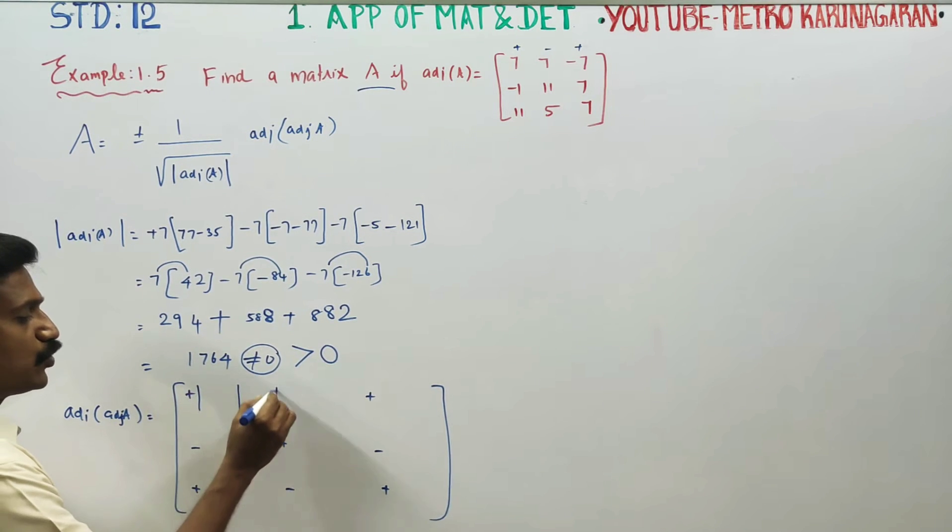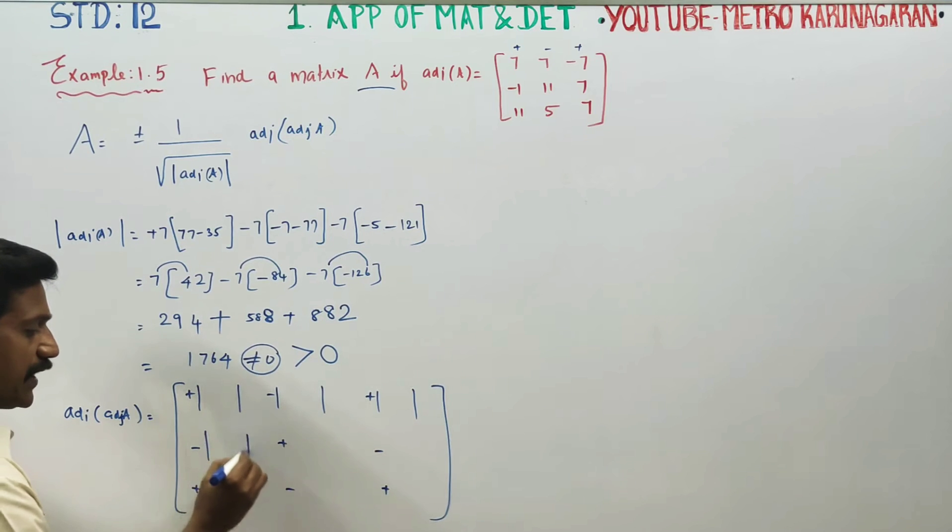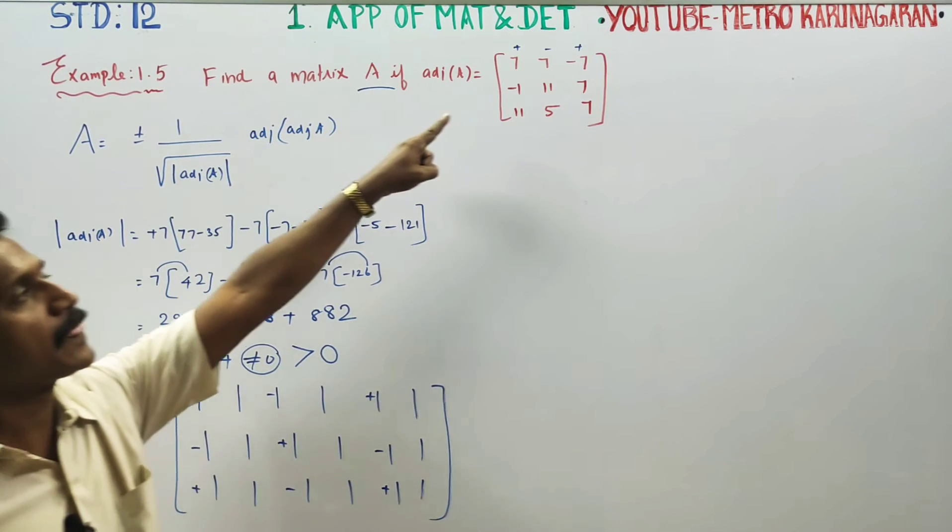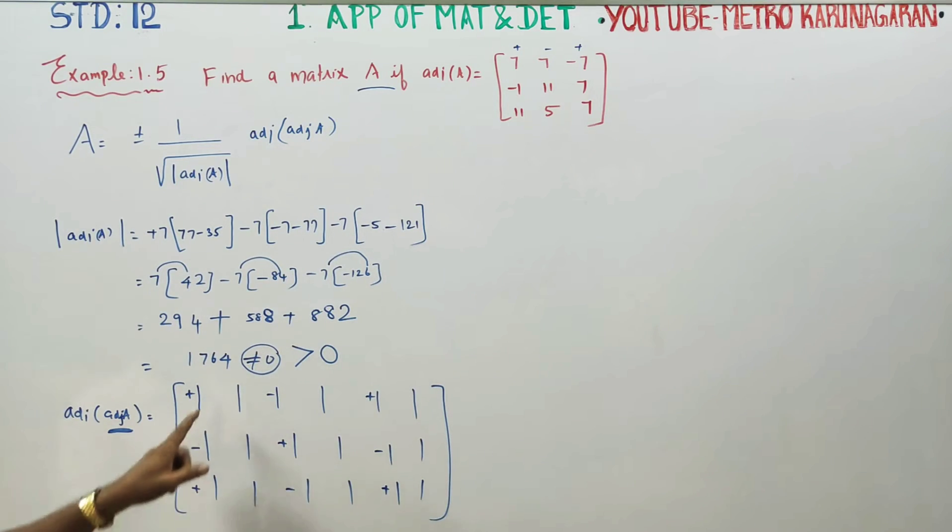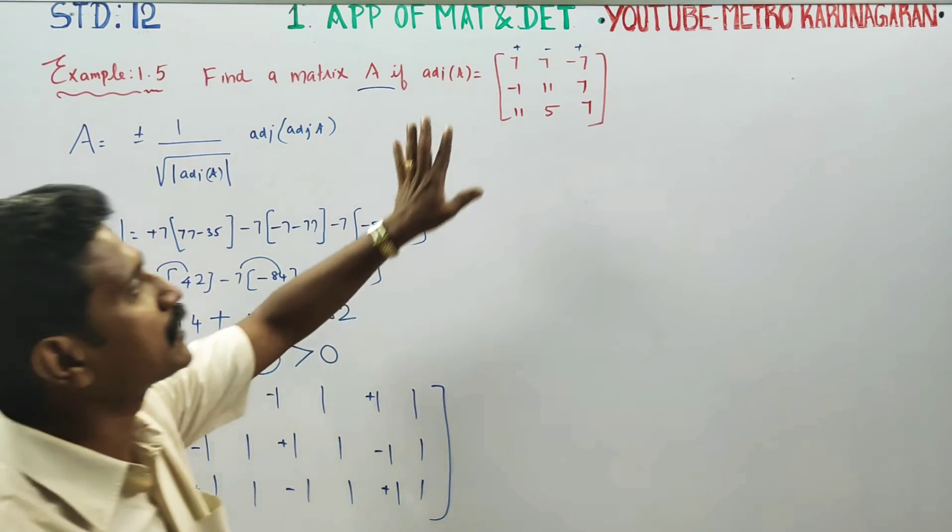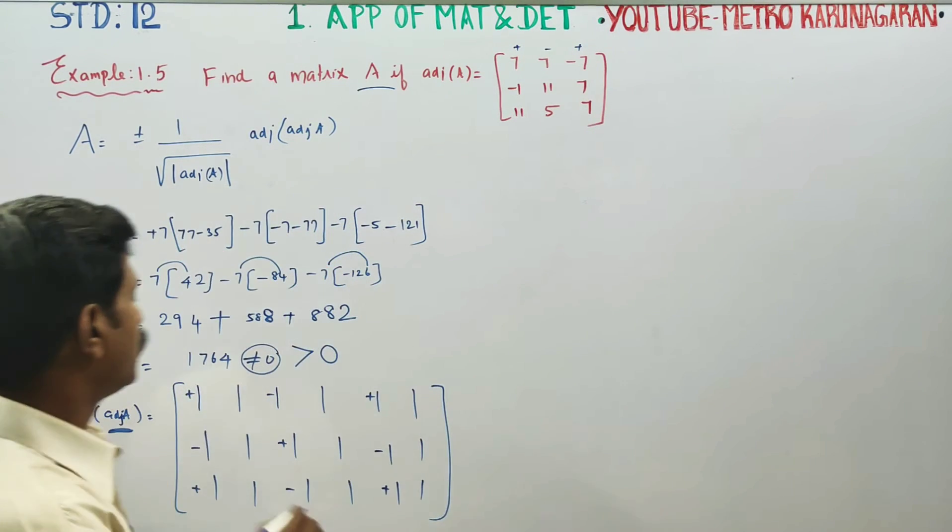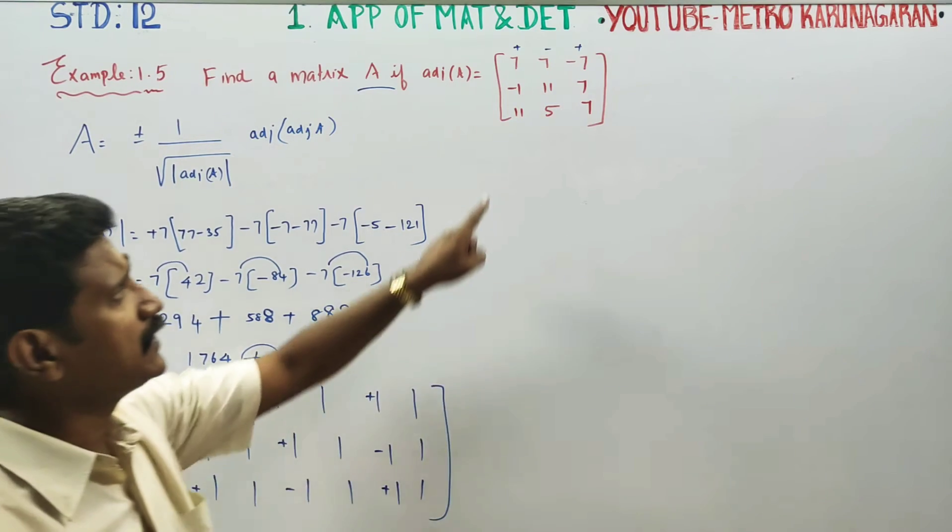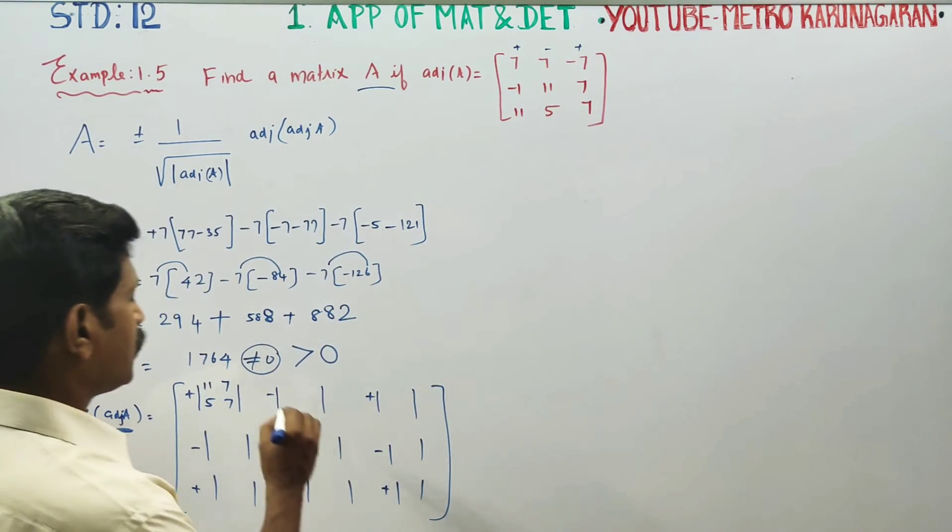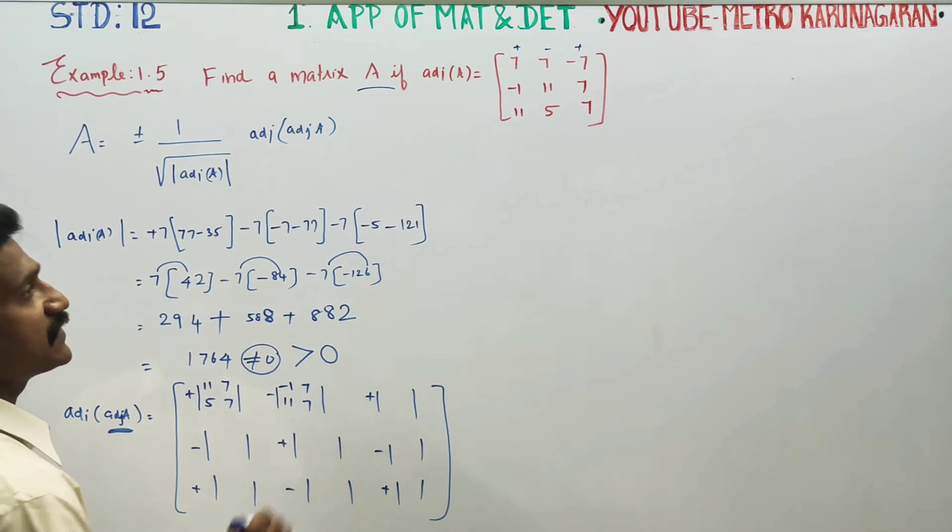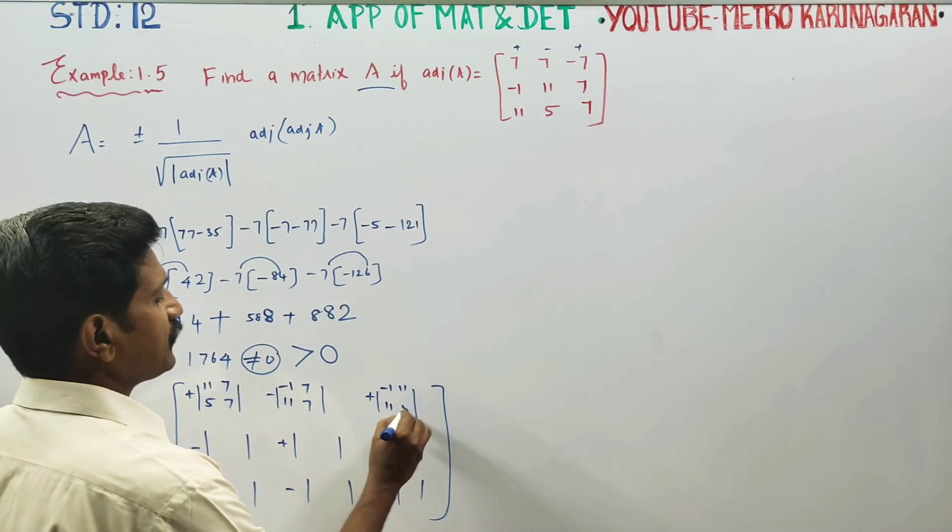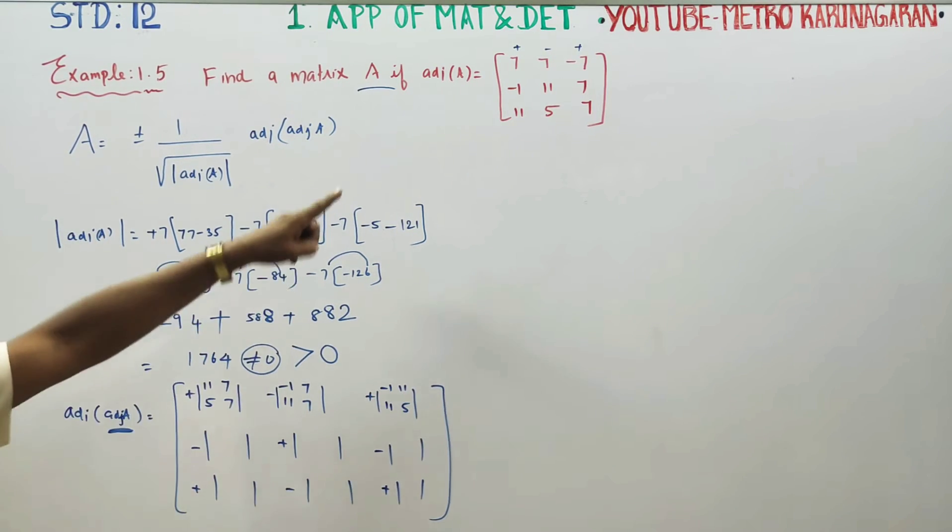How to find adjoint of a minus 2 by 2 Determinates. Adjoint. Here are rows and columns close. First minor row column 1, you will be getting 11, 7, 5, 7. Second row second column close, you will be getting minus 11, 7. Third row column close, minus 11, 11, 5. Second row second row.